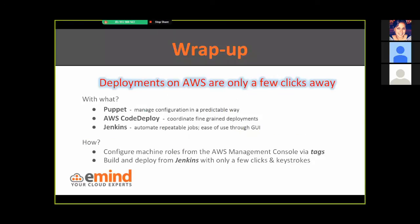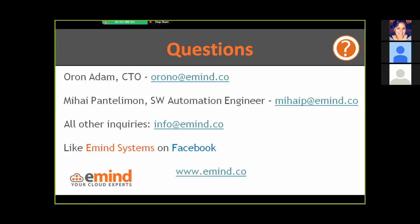To summarize, if I were to say it in one phrase: with this solution, deployments in the Amazon Cloud are only a few clicks away. This is done with Puppet as a configuration management tool, CodeDeploy quickly becoming the de facto deployment tool for AWS, and Jenkins as a cross-platform, easy-to-use CI solution. What the customer needs to do after receiving this solution is play with machine tags, configure environments through the console, and then trigger build and deploy jobs from Jenkins with only a few clicks and keystrokes.